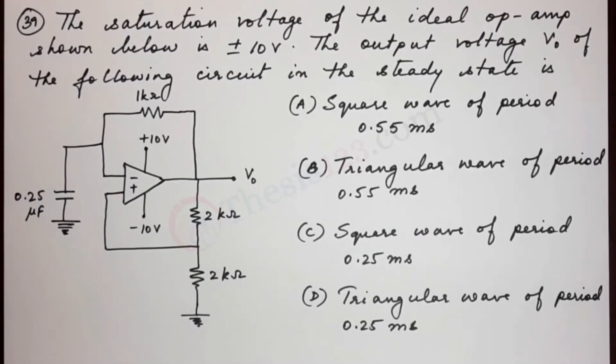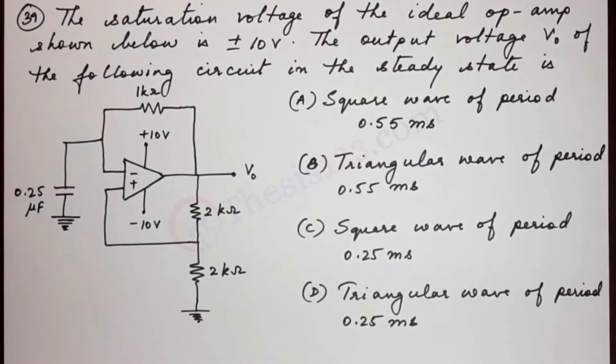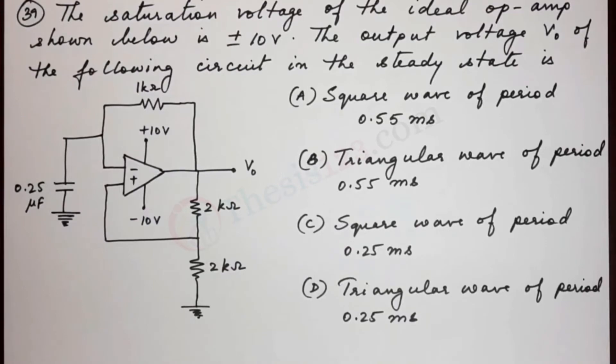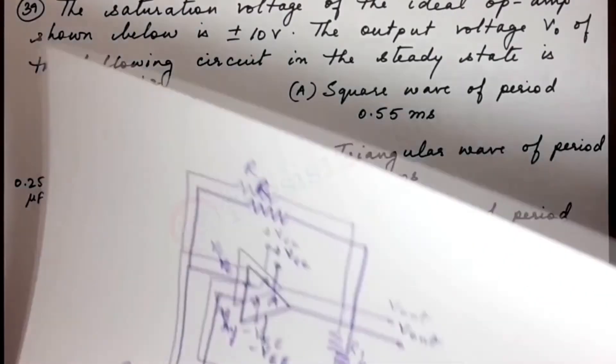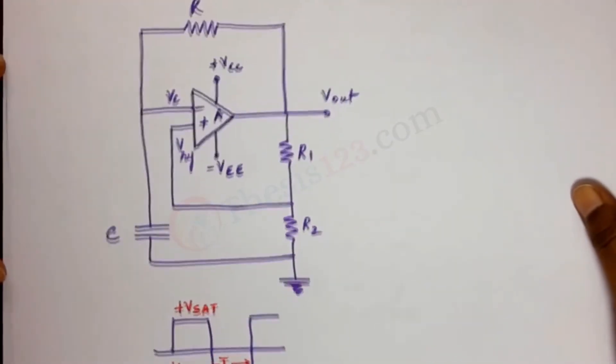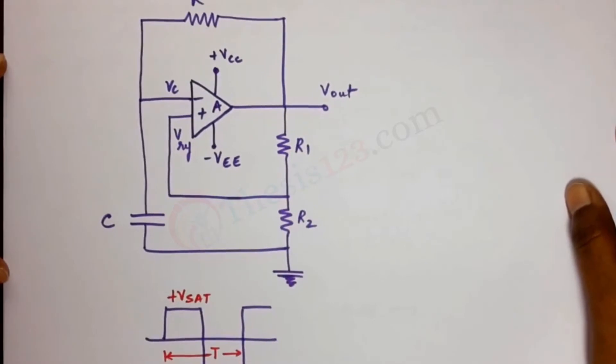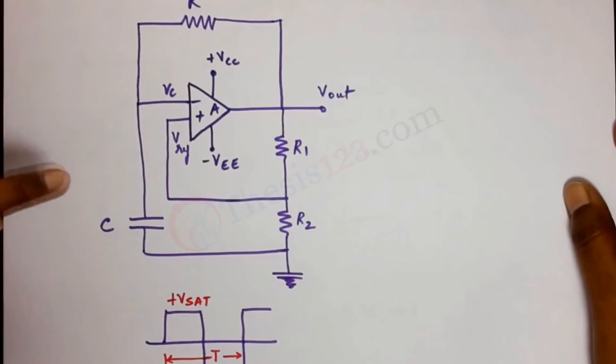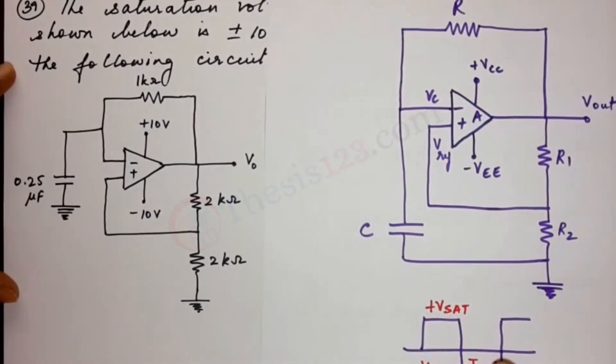Now this op-amp given here resembles an op-amp multivibrator, or more specifically it resembles an A-stable op-amp multivibrator. I have drawn the figure here of an A-stable multivibrator. So if you see carefully, this general diagram of an A-stable op-amp multivibrator is exactly similar to what's given to us in the question.